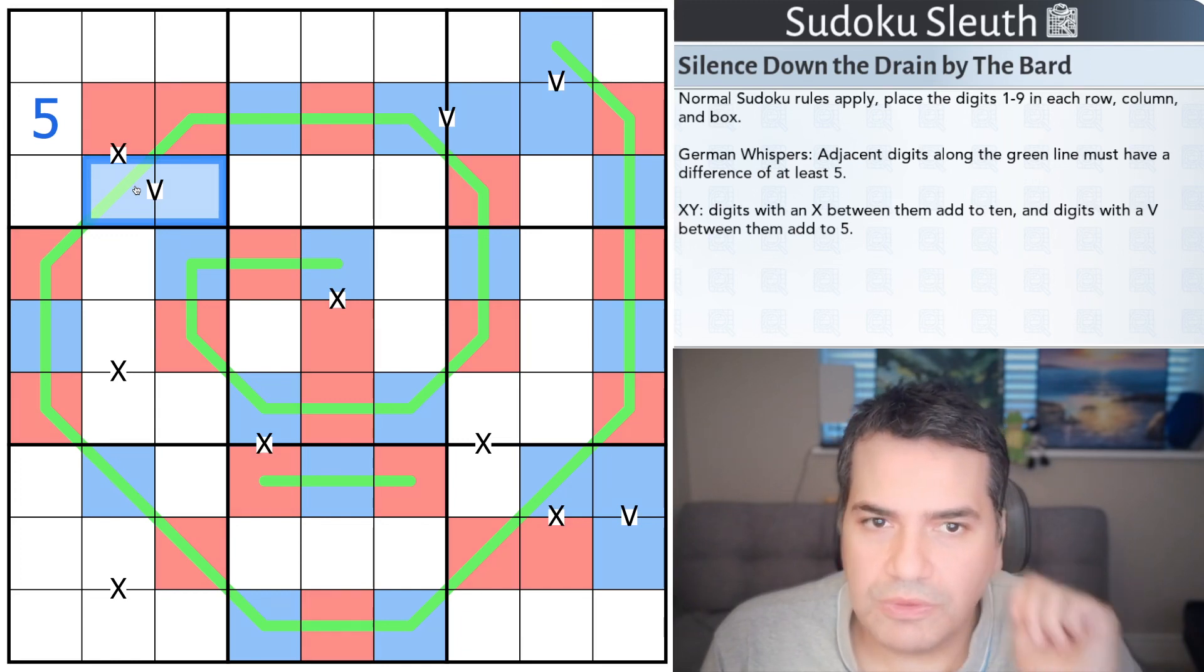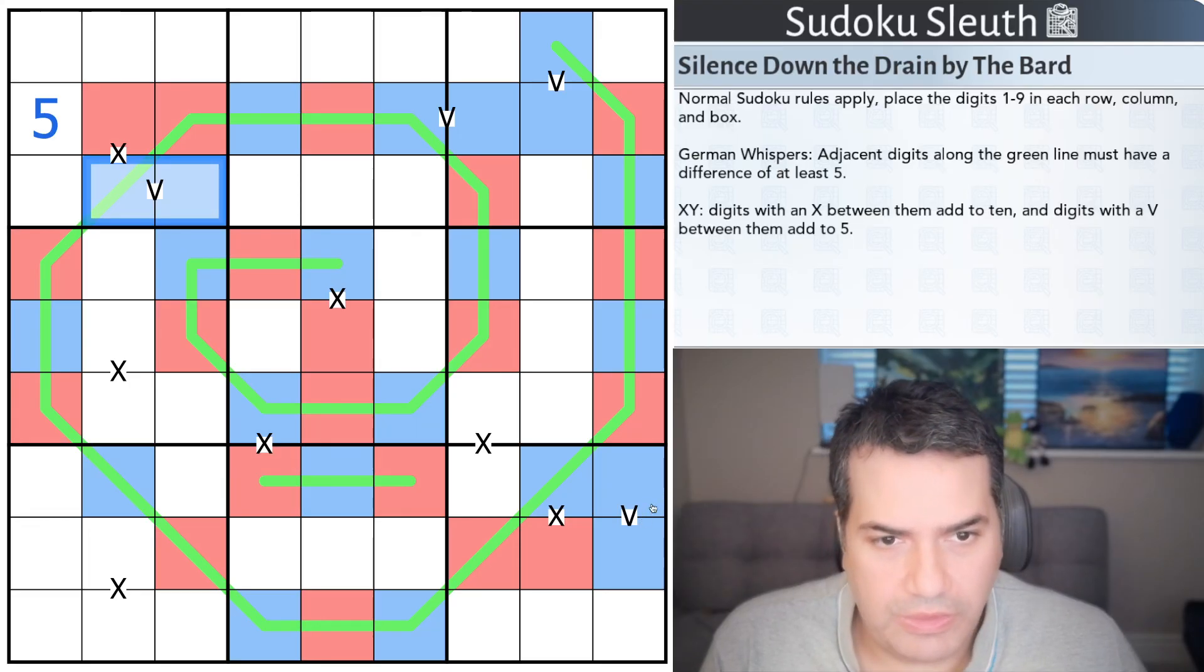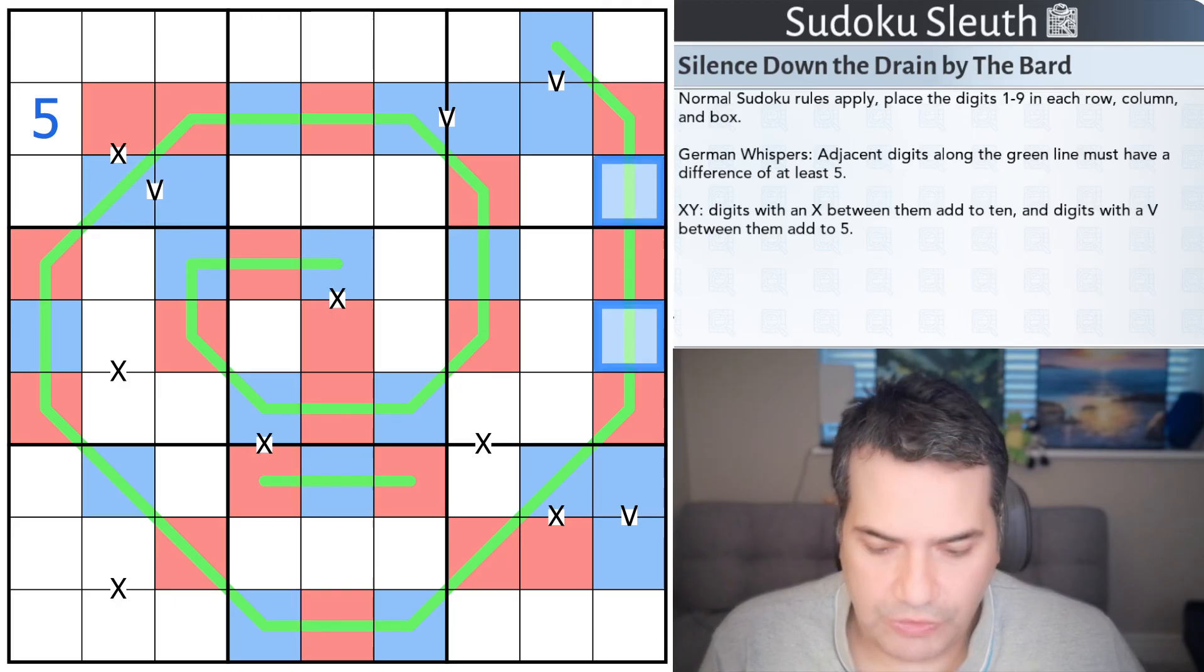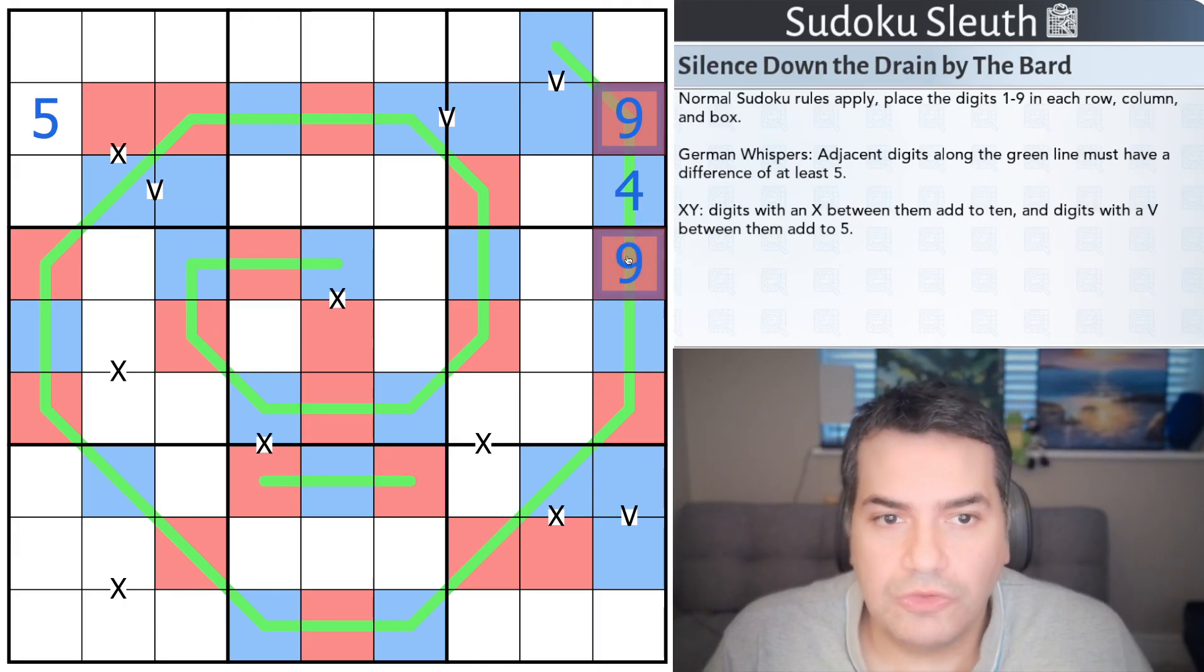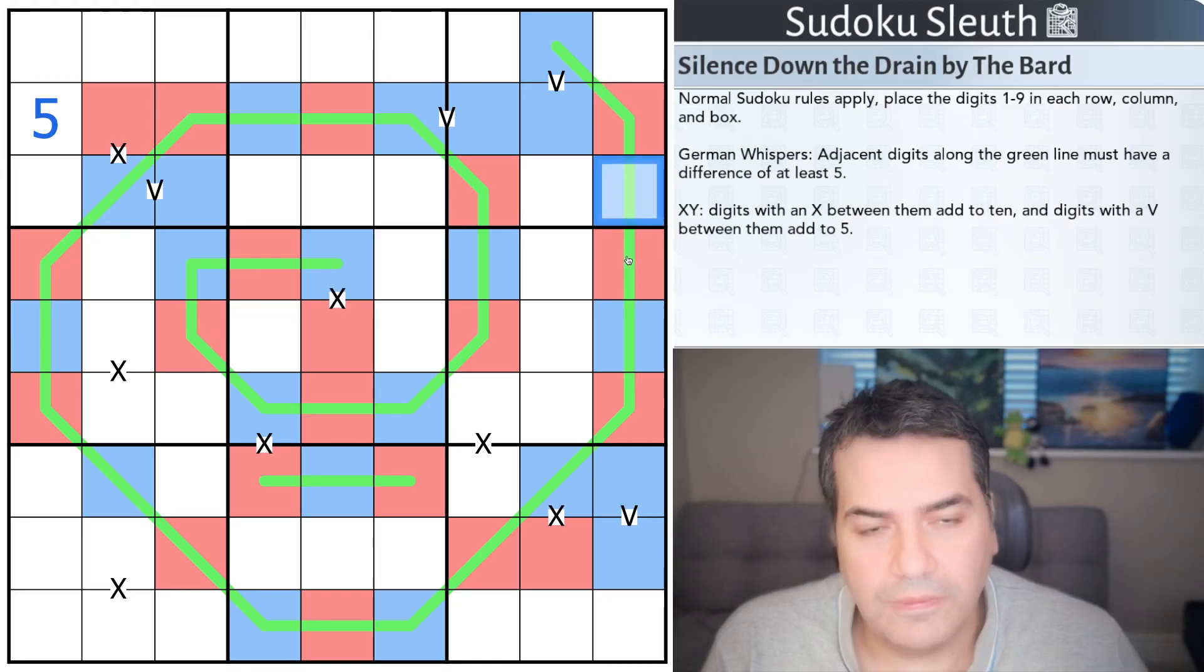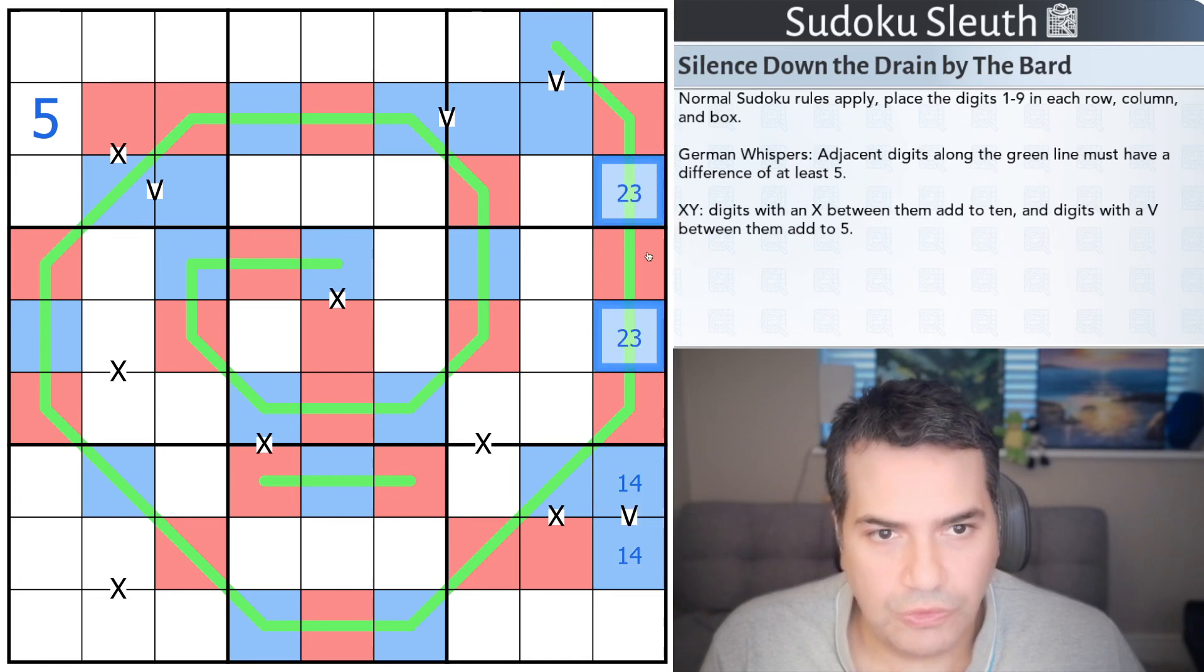And it just doesn't seem likely that we've been given all of this information for no good reason. So I am going to color the grid today, and row two gives us a five. We've got basically a whole bunch of digits that can't be five. Five can't be on a German whisper line, otherwise the neighbors would be zero or ten. Five can't be part of a ten, because the next neighbor would have to be ten. Five can't be on a V, otherwise the neighbor would have to be zero. So row two, this is a five. And I guess what we're probably, I mean, what I can do, obviously, with German whispers.